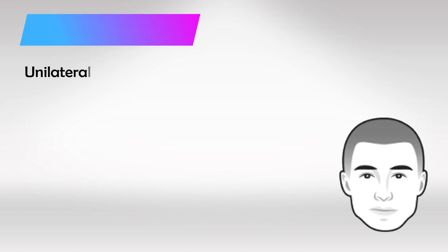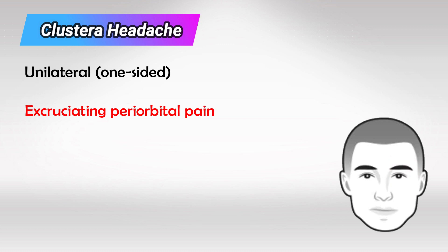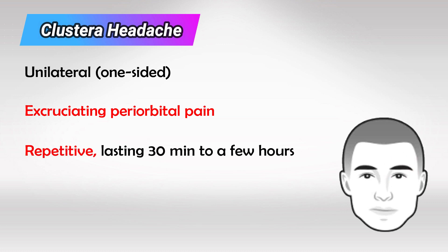The third type we have is the cluster headache, and this is also unilateral, affecting only one side of the head. The pain is the absolute worst. The patient would experience an excruciating pain around one of the eyes. It is also referred to sometimes as the suicide headache, because patients sometimes end their lives to avoid the pain. For some reason, it is a lot more common in males, and it is associated with symptoms in the eyes and nose, like runny nose and tearing of the eyes. The symptoms would last anywhere from 15 minutes to 3 hours, and the reoccurrence is very high.